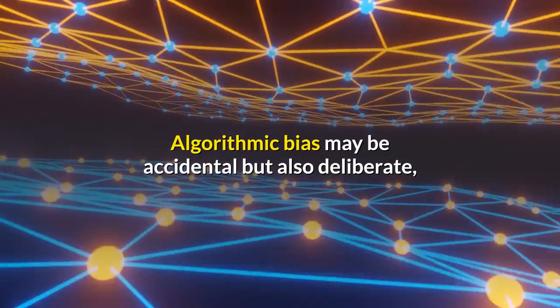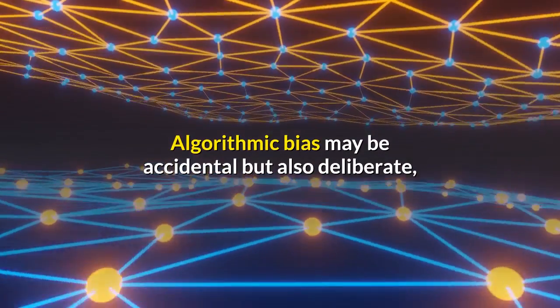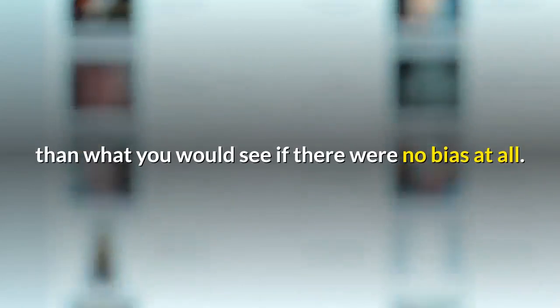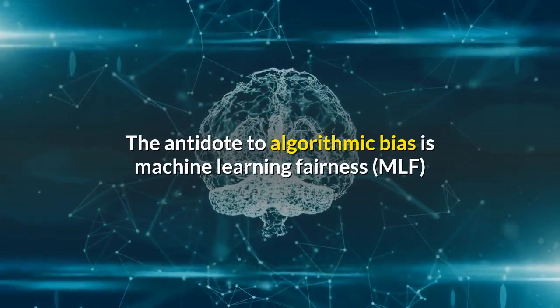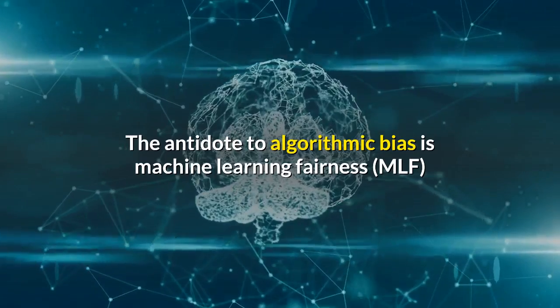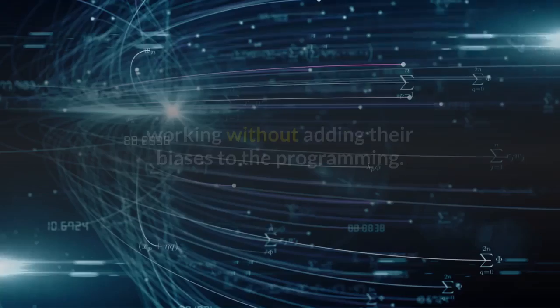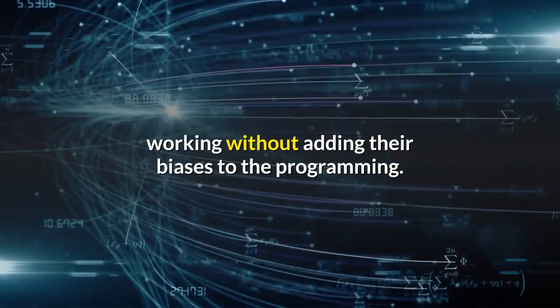Algorithmic bias may be accidental but also deliberate, such that different search terms may produce the results the tech giants think you ought to see rather than what you would see if there were no bias at all. The antidote to algorithmic bias is machine learning fairness and that requires programmers who are capable of working without adding their biases to the programming.